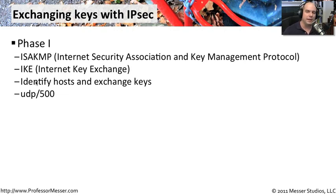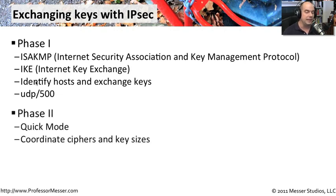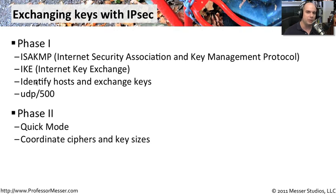Once phase one is in place and the keys have been exchanged, the second phase can begin. Phase two, which we call quick mode, is simply about communicating to each device what ciphers, protocols, and key sizes we would like to use to talk back and forth. Both sides coordinate and decide which ones they would like to use. After phase one and phase two are up and running, the communication is established between those IPsec endpoints and they can communicate securely.